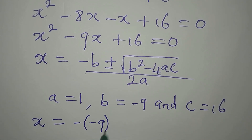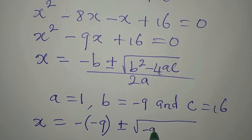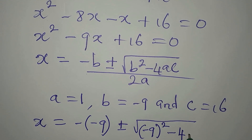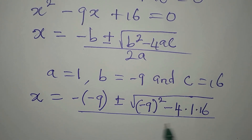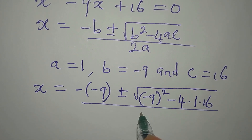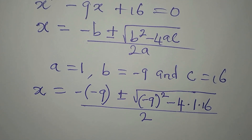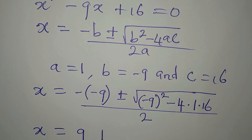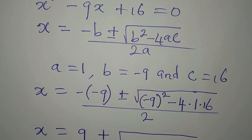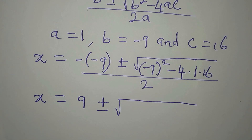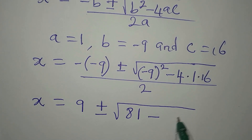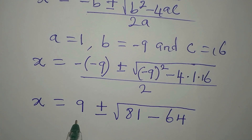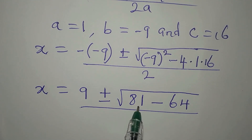Substituting into the formula: x equals minus (minus 9), plus or minus square root of (minus 9) squared minus 4 times 1 times 16, divided by 2 times 1. Simplifying: negative negative is positive 9, minus 9 squared gives 81, and minus 4 times 1 times 16 gives 64. Divide by 2.